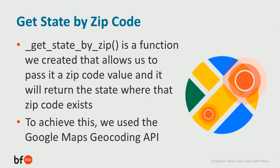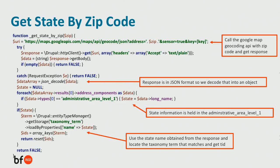The getStateByZip function uses the Google Maps Geocoding API. We make a call to the API with the zip code and get a response in JSON format, which we decode into an object. The state information is held in the administrative_area_level_1 array. In the last section of the code — which is the most interesting — we take the state name obtained from the response, match it to the state taxonomy term, and get the term ID from there. That's how we get our filter value and put it back into the URL.